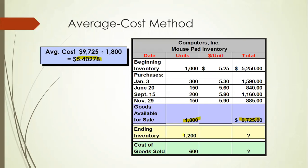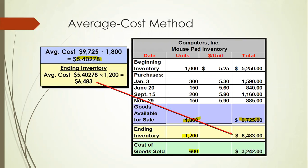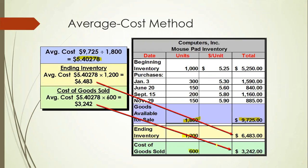The ending inventory is 1,200 units and you have sold 600 units. Using the average costing method, the goods are sold at the average price of $5.4025. The ending inventory is calculated as 1,200 units multiplied by $5.4025, giving you $6,483. The cost of goods sold is then calculated as cost of goods available for sale minus the ending inventory.